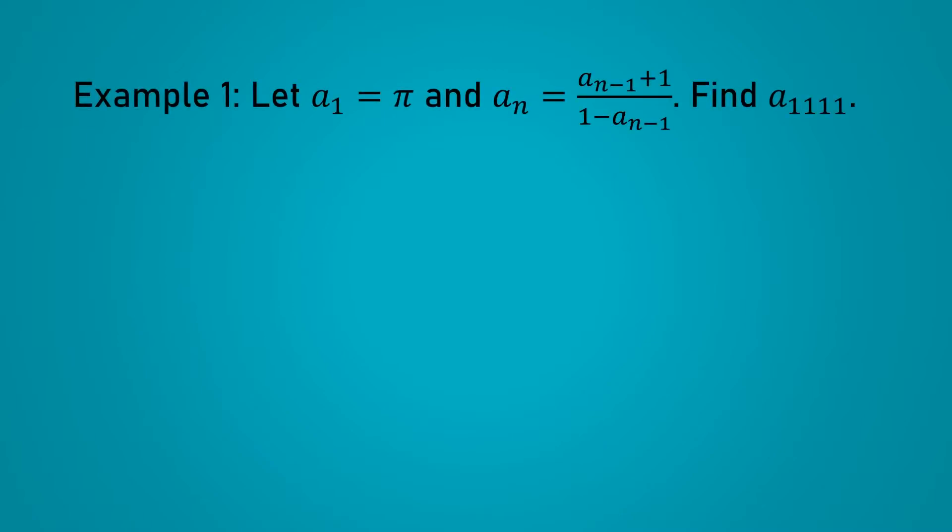We are given a sequence that starts with pi and proceeds on according to a somewhat strange rule. How are we supposed to find A1111? Feel free to pause the video here and likewise for the later examples if you would like to think for a little bit on your own.